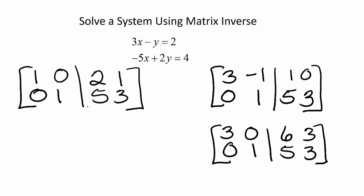Notice now we have our inverse matrix. So our inverse matrix is 2, 1, 5, 3.